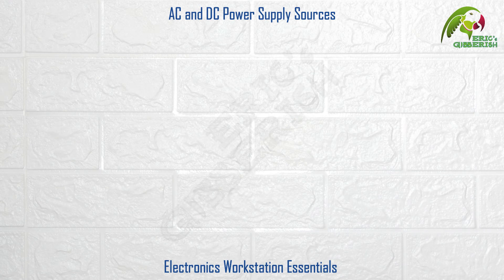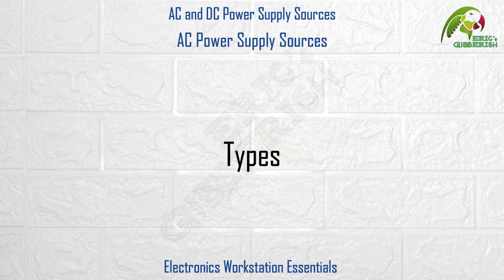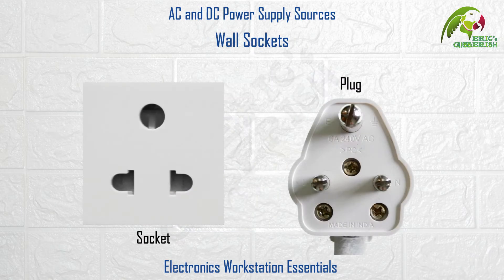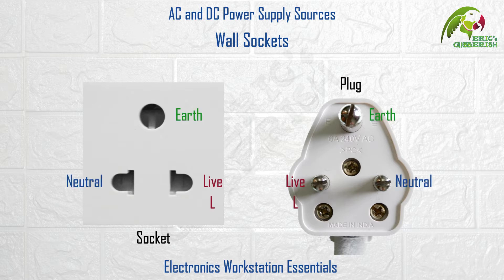So let's begin with the types of AC power supply sources. Wall sockets. Wall sockets have three terminals or connections: live, neutral and earth, most often marked as L, N and E respectively. Out of which live and neutral carry the AC supply voltage.